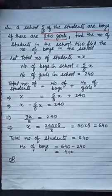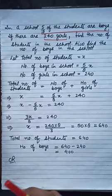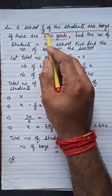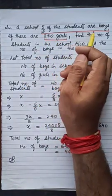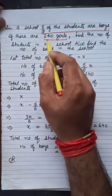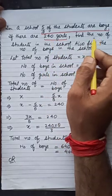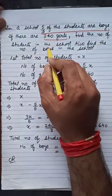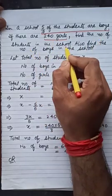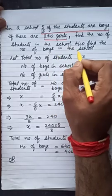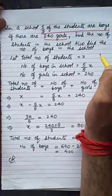Hello students, today we will solve this question. In a school, 5/8 of the students are boys. If there are 240 girls, find the number of students in the school, and also find the number of boys in the school.